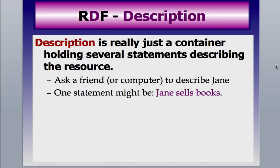The D in RDF is description. You can think of description as a container holding everything together, or even holding several triplets. So if you ask a friend of a friend what Jane does, they'd say Jane sells books — specifically if they know which Jane you're talking about. That's where the URI comes in for the computer. Using RDF triplets, you could ask a computer the same question and it would return Jane sells books.